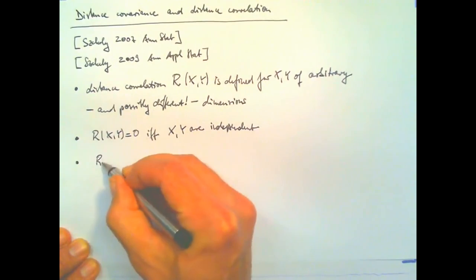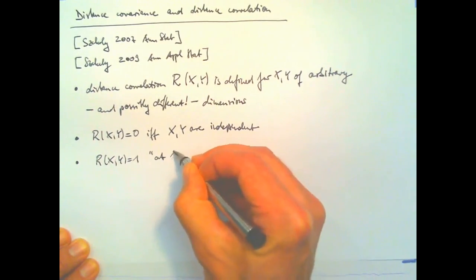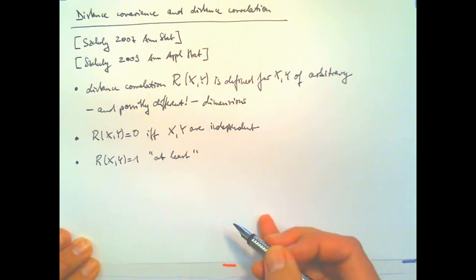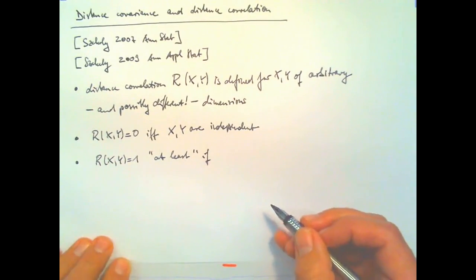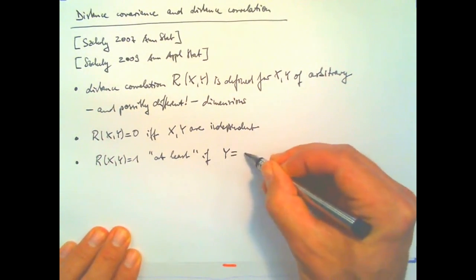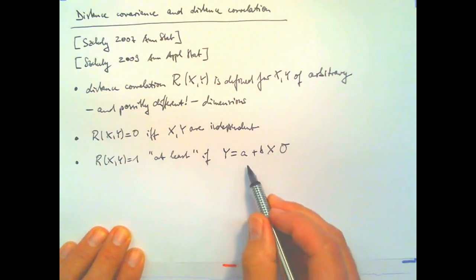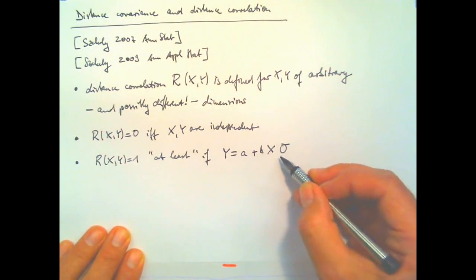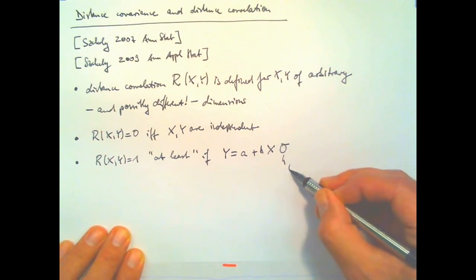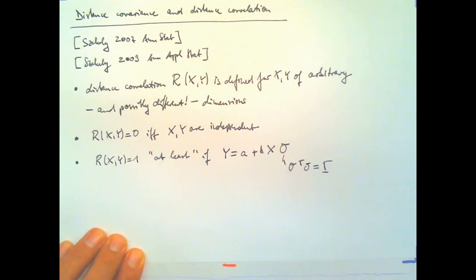This correlation becomes zero if and only if X and Y are independent. It becomes one if there is a close functional association. So I'm writing hand-wavingly at least if Y equals A plus B times X multiplied with O where O is an orthogonal matrix. So O transpose O should be the identity matrix. And it does not take negative values.